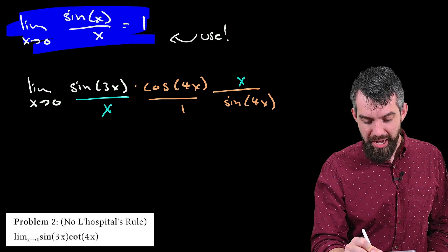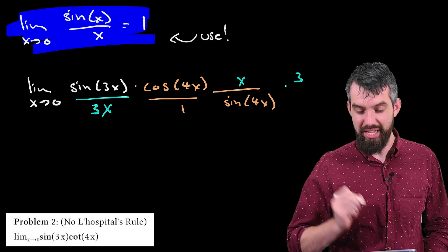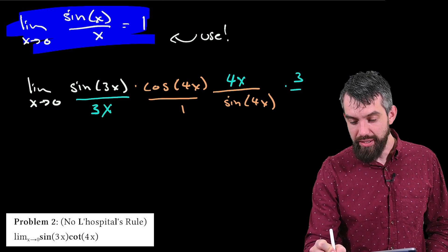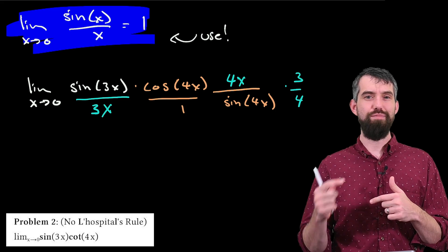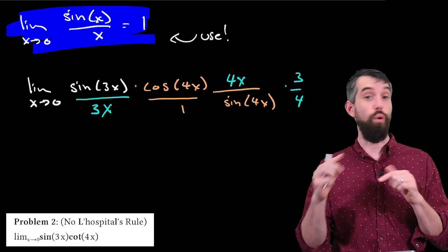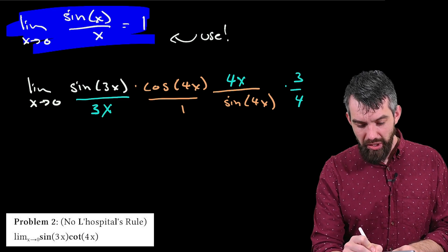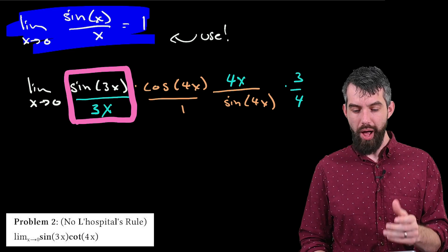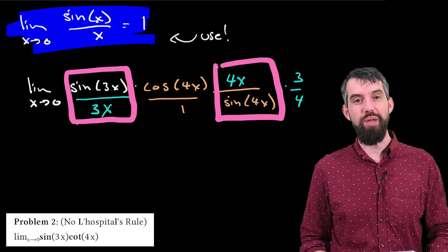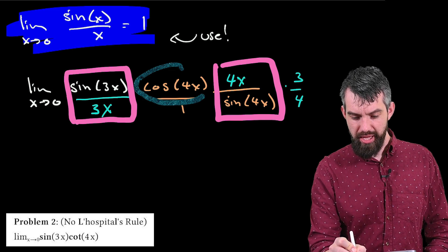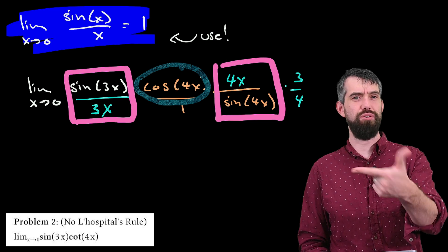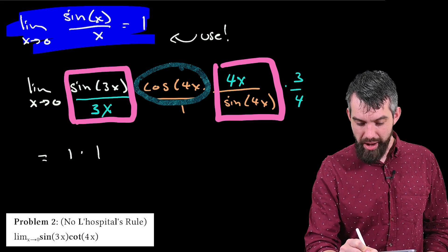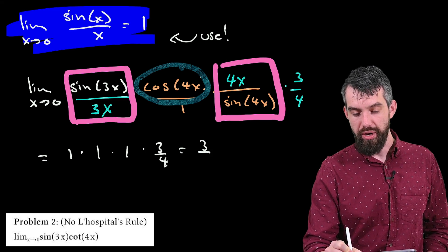I'm going to put a 3 on the bottom — which is fine — but then cancel it by multiplying on top. Likewise, I'll put a 4x over here, as long as I divide out by 4 as well. So collectively I've multiplied and divided by x, by 3, and by 4 — all the same thing. This lets me see that sine(3x) over 3x goes to 1, sine(4x) over 4x goes to 1, and the cosine(4x) term in the limit as x goes to 0 is just 1. Adding it all up: 1 times 1 times 1 times 3/4. Final answer: 3/4.